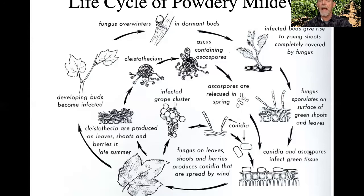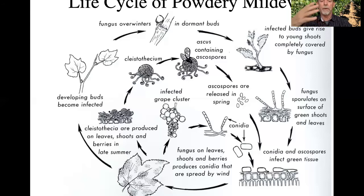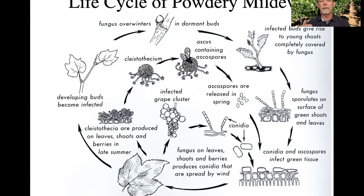Both conidia and ascus spores continue to infect green tissue. They land on a cell, begin to grow haustoria down into the cell, and spread mycelia across the cells. The asexual conidia are spread by the wind to other leaves, other vines, and to the fruit. Cool to moderate temperatures with moist air humidity contribute to their growth and spread. As temperatures get hotter in the latter part of summer, this inhibits fungal growth — it doesn't completely stop it, but it slows it down — while remaining in a darker environment promotes it.